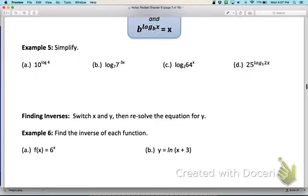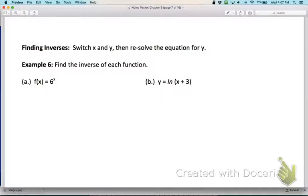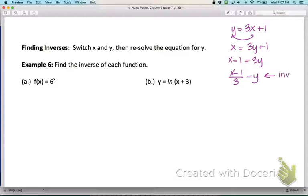And then the last thing is we can use our inverse properties the same way that we did when we found inverses in chapter 5. Remember that the first step when we want to find the inverse of an equation, for example, when we did something like y equals 3x plus 1, the first thing that we did was we switched x and y: x equals 3y plus 1. And then we resolved the equation to get y by itself. So we end up with x minus 1 over 3 equals y. This is our inverse.